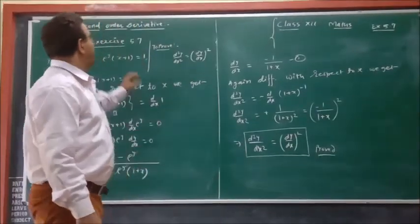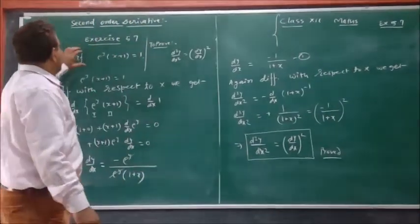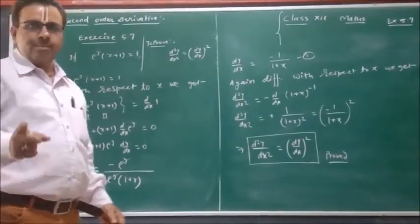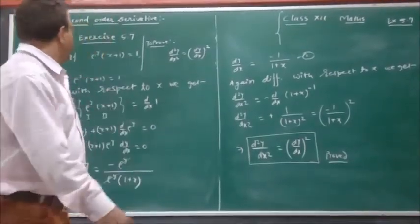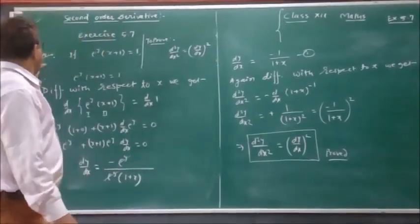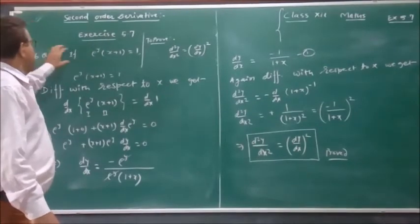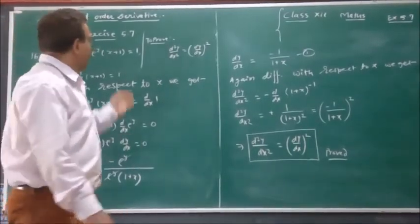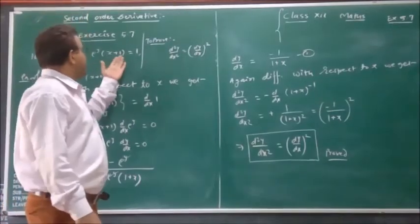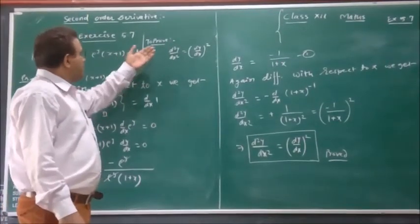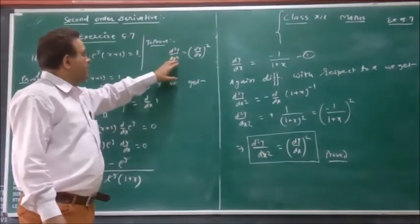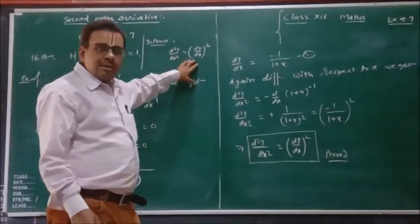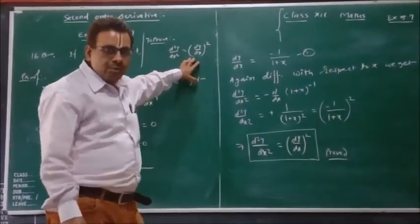As I am going to solve, this is an argument remaining problem of Exercise 5.6. Question number 16 is given as e raised to y divided by x plus y is equal to 1. We need to prove here d squared y divided by dx squared is equal to dy by dx whole squared.